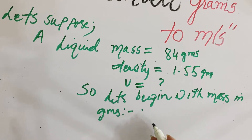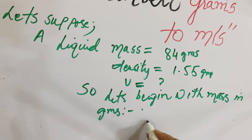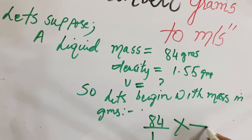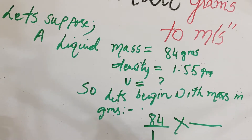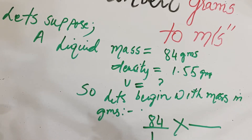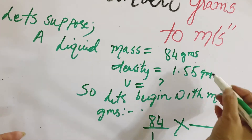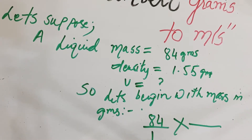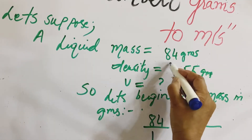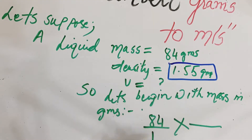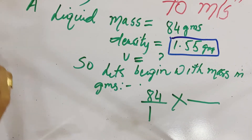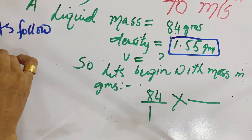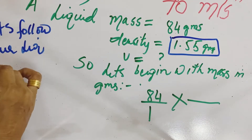We begin with the mass in grams, which is 84 grams, and we will convert grams to milliliters by using the density as our conversion factor. So we're going to use this density — 1.55 grams per ml — to do the conversion.